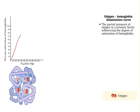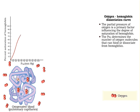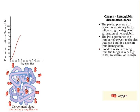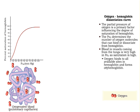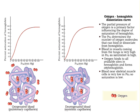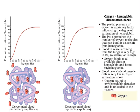A key factor influencing the production of oxyhemoglobin is the partial pressure of oxygen. The partial pressure of oxygen determines the number of oxygen molecules that can bind (oxygen loading) or dissociate (oxygen unloading) from hemoglobin. Blood in vessels coming from the lungs is very high in oxygen partial pressure, so saturation is high, because oxygen binds to all available sites in hemoglobin and forms oxyhemoglobin. Blood near skeletal muscle cells is very low in oxygen partial pressure, so saturation is low, and oxygen is unloaded to the tissues.